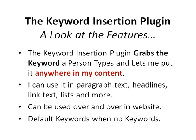It works by grabbing the keyword a person types and then lets me put it anywhere into my content — anywhere inside a page or post. I can use it as paragraph text, basic text, in headline format such as H1, H2, H3, and so on. I can use it in link text, in lists, and in quotes — anywhere within the page or post editor in WordPress. And I can use it over and over again, setting up different instances for each keyword I want to target.